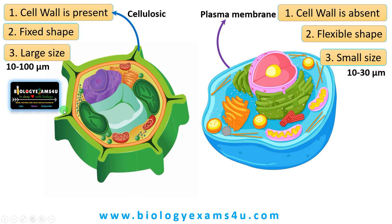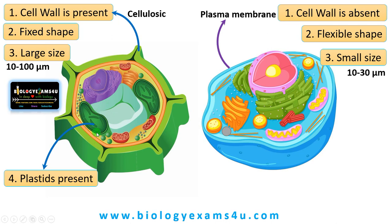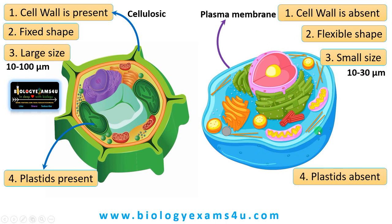In plant cells, a special type of organelle called plastids is present. Plastids are semi-autonomous double membrane-bound organelles involved in synthesis and storage of food. Chloroplast is a plastid involved in photosynthesis, amyloplast is involved in storage of starch, and chromoplast is involved in storage of pigments. Plastids are absent in animal cells.